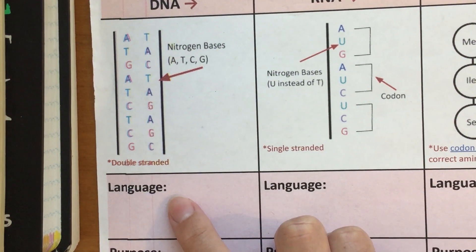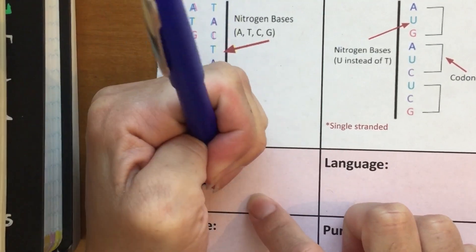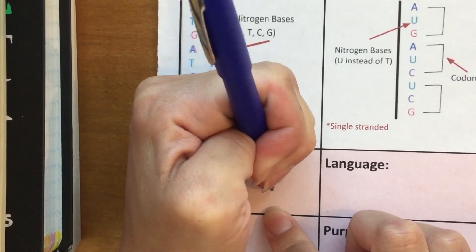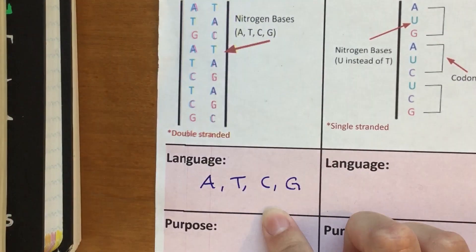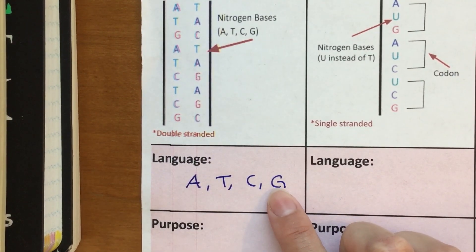So if we're discussing our language, that's what I'm going to write for language—those four bases: A, T, C, and G. Adenine, thymine, cytosine, guanine. For now, you can just know the abbreviations.